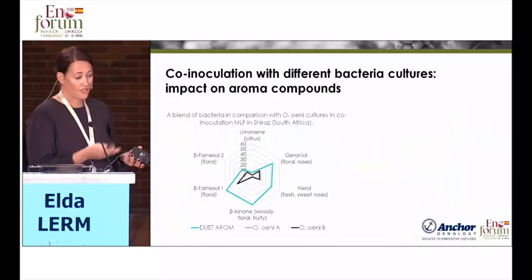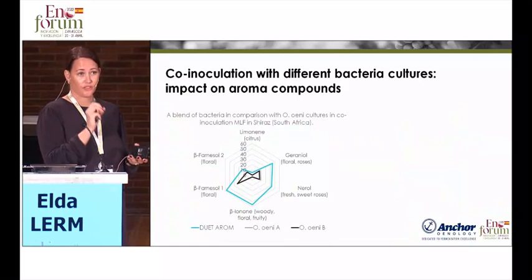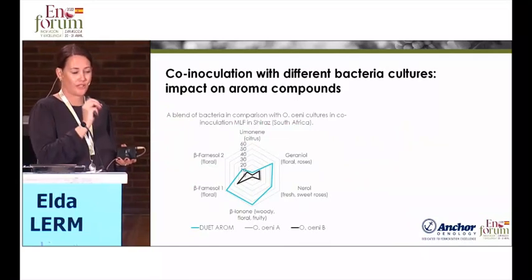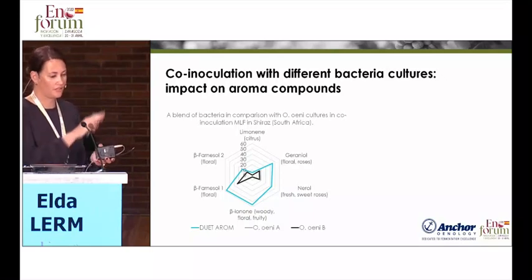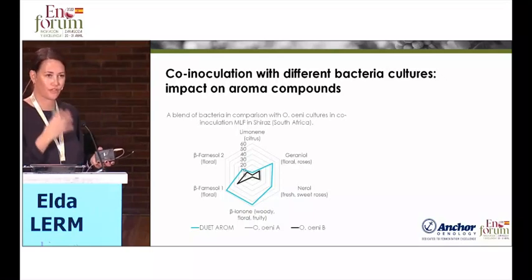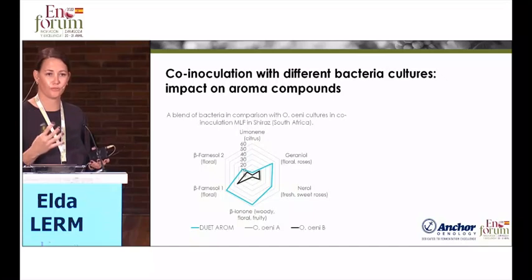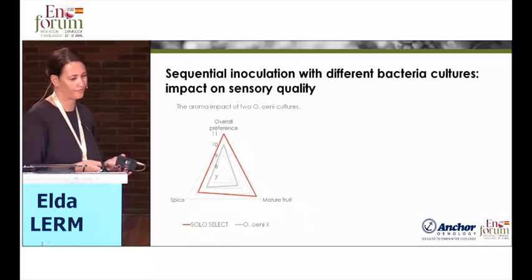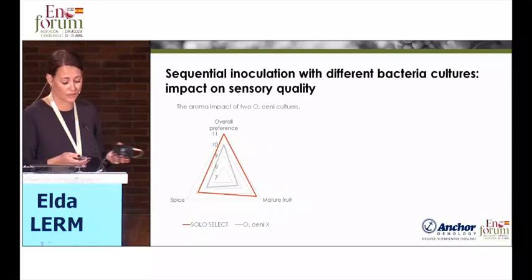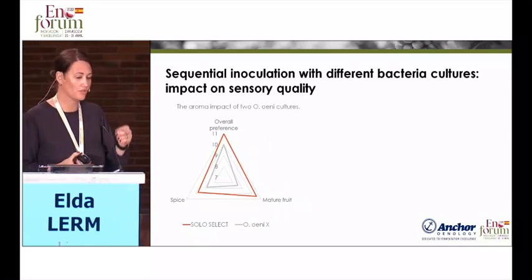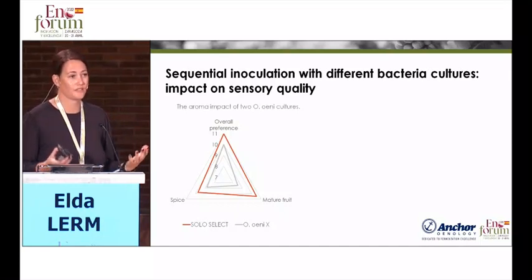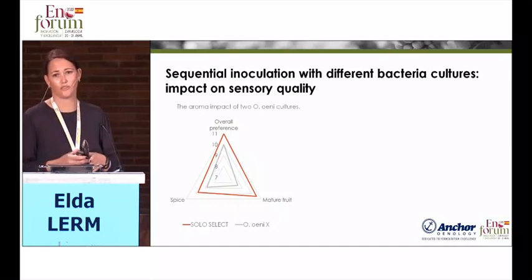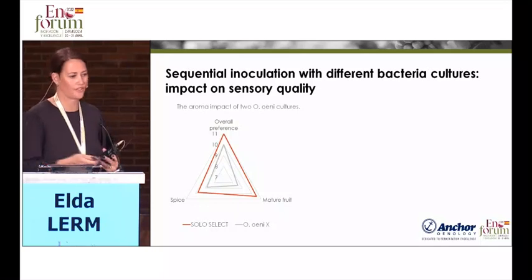Depending on which strain you choose, you can have a very different impact on the wine profile. The Duet blend shows lots more of the floral, fruity, monoterpene-type compounds, and the pure Oenococcus oeni cultures a lot less. The same applies for sequential inoculation — you can choose a culture that gives more mature fruit and spice, whereas another culture doesn't. It really is dependent on you as the winemaker and the style you want.